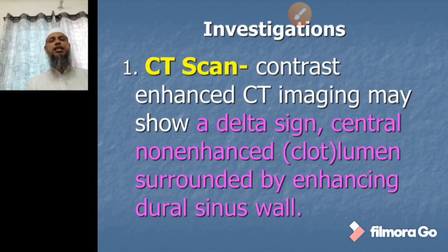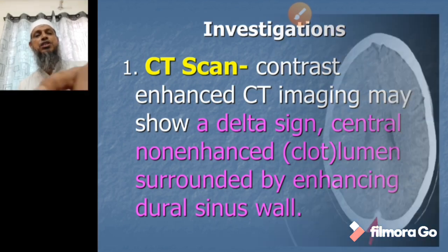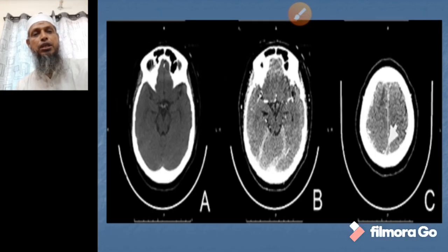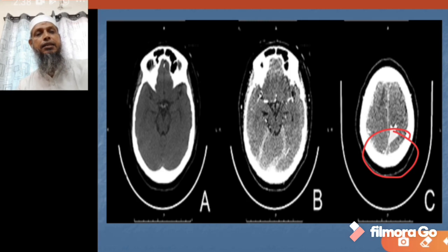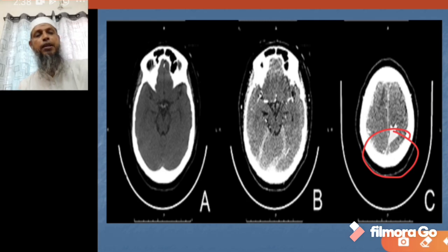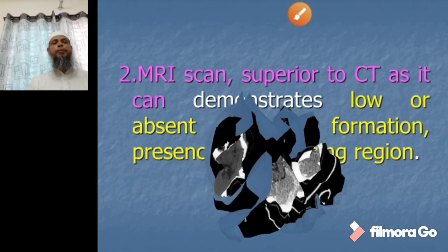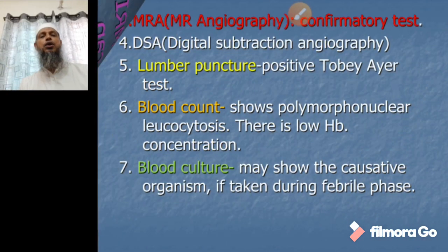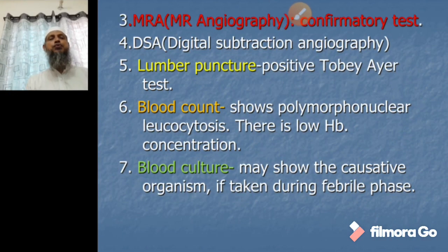Investigations: first, contrast-enhanced CT scan may show a delta sign — a central non-enhanced lumen surrounded by an enhancing dural sinus. MRI is superior to CT scan as it can demonstrate low or absent flow, clot formation, and presence of enhancing regions.